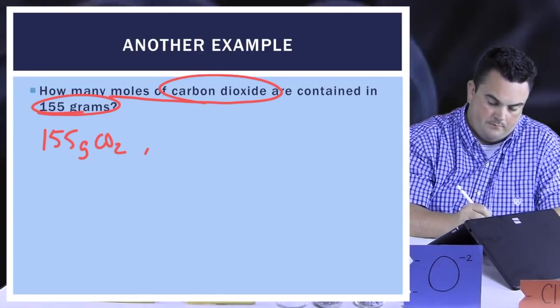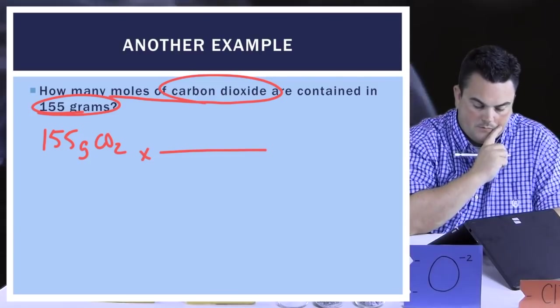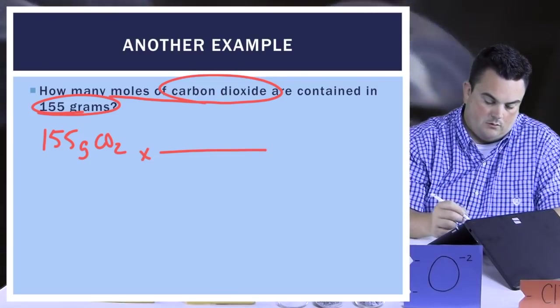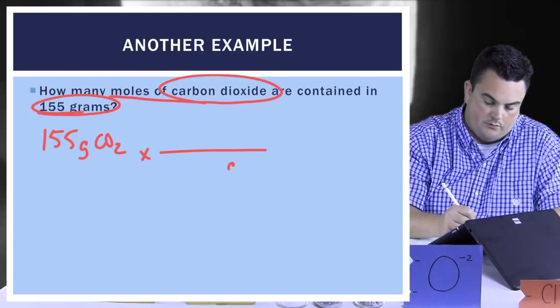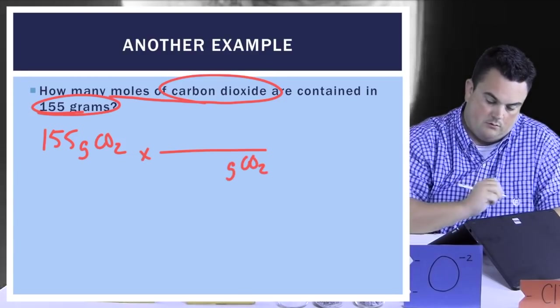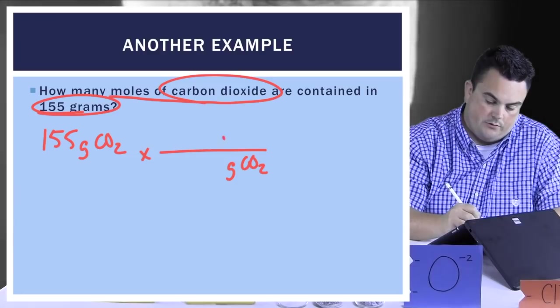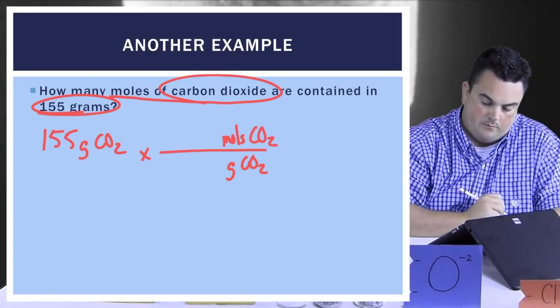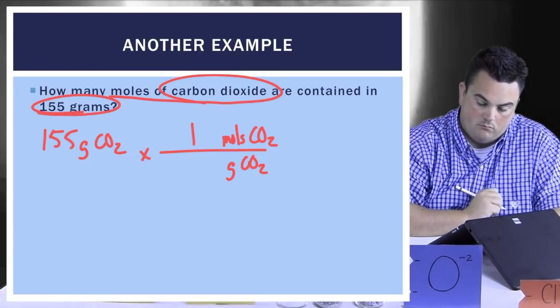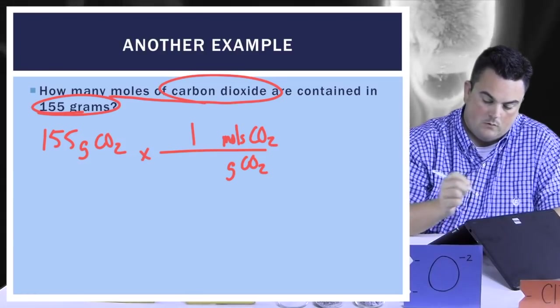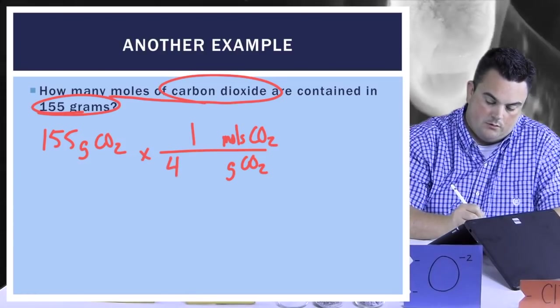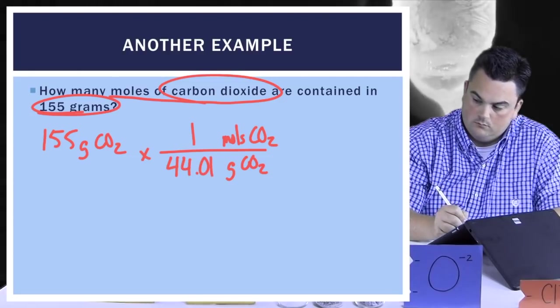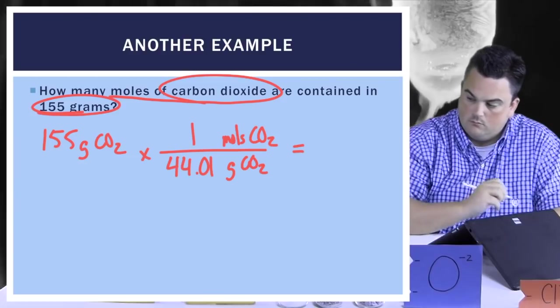Alright, we're going to multiply by a conversion factor. Just talked about this with the last example. Let's get our units to cancel out. What unit should be in the denominator? Grams of CO2. Good. And the unit we're converting to on top should be? Moles of CO2. Good. Let's get those numbers in. What number goes with moles? One. And what is our molar mass for carbon dioxide that goes in the denominator for grams? 44.01. Again, that's from the previous example. We already found the molar mass.